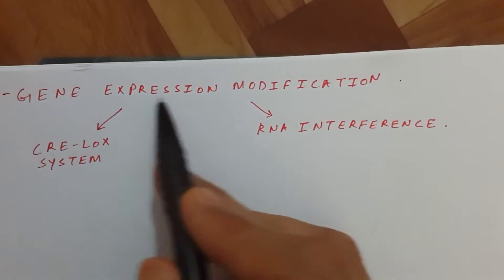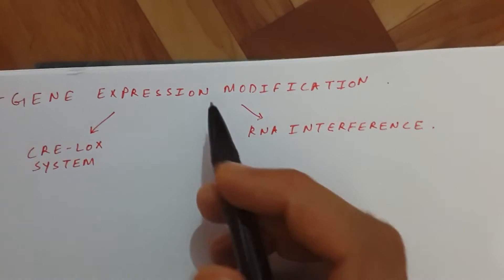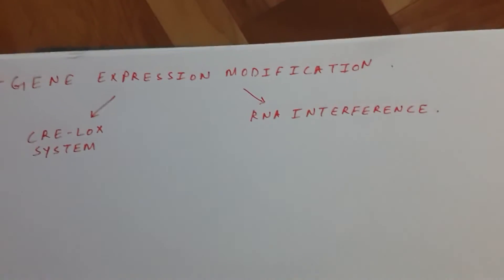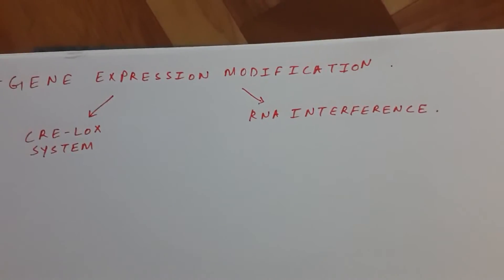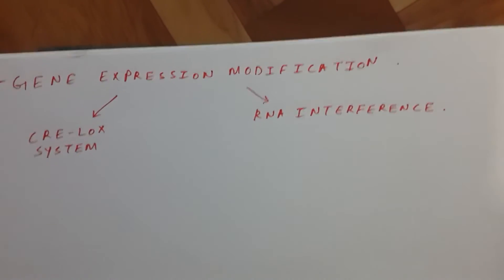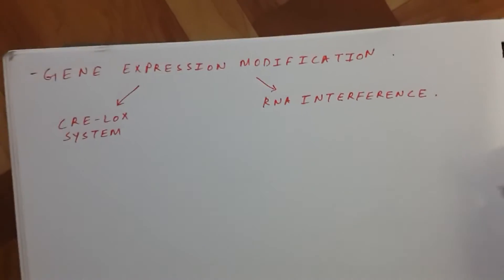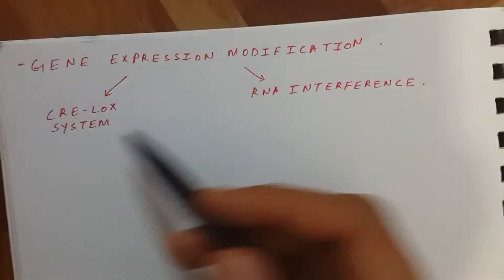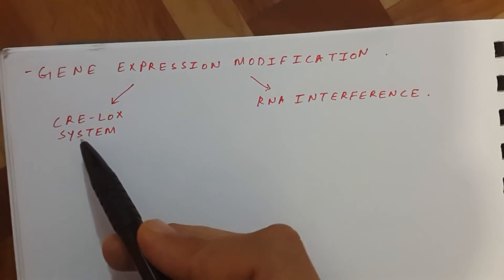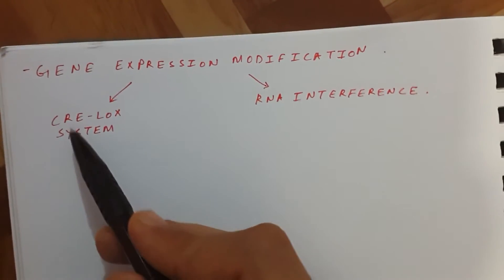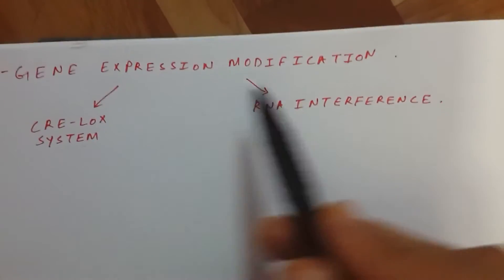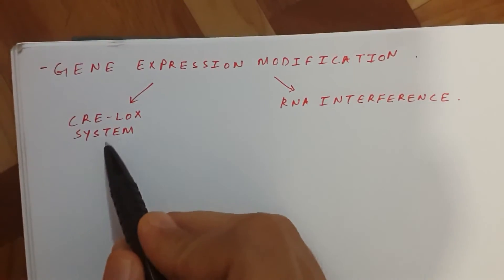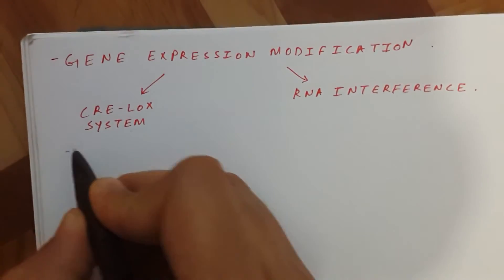The last thing we will discuss is gene expression modification. By using certain techniques or strategies, we can increase or decrease gene expression. The two main systems to remember are the CRE LOX system and RNA interference.